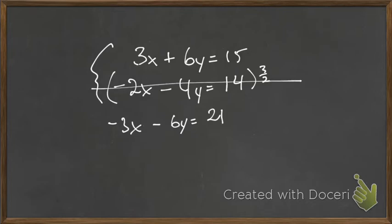And that would give me negative 3x minus 6y equals 21. And we're not going to do the whole thing because we've done this. But once we've gotten here, what's going to cancel? Everything's going to cancel. We've got an issue here, right? Look what's going to happen. Zero equals 36. This means there is no solution.